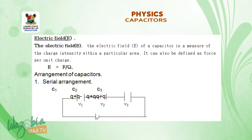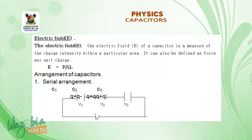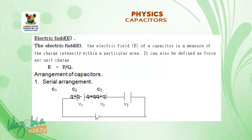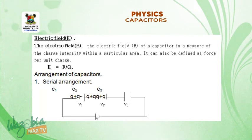During our last lesson, we discussed electric field. The electric field E of a capacitor is a measure of charge intensity within a particular area. It can also be defined as force per unit charge, where E is equal to F over Q.